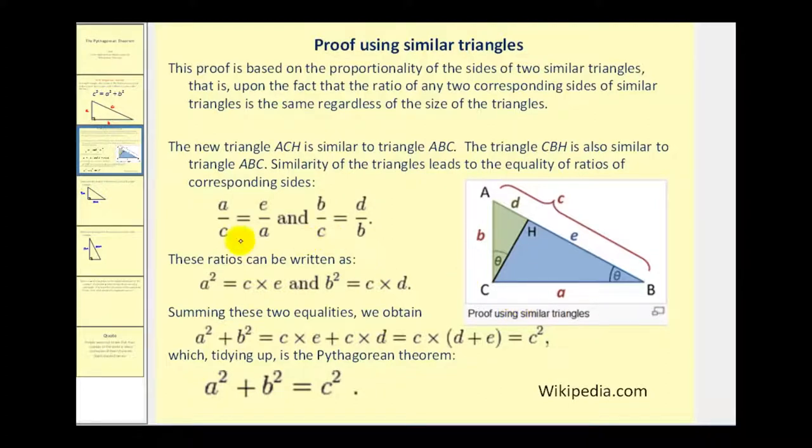So we're going to set up two proportions using these similar right triangles. First we're going to compare the ratio of A to C, which is the longer leg to the hypotenuse of the largest right triangle. And that's equal to the ratio of E to A, which is the longer leg of the blue right triangle to the hypotenuse of the blue right triangle.